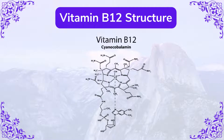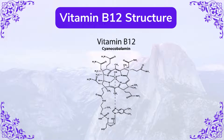This is the vitamin B12 structure — it is a very complex structure. You can see there is a ketone group, an amino group, an alcohol group, and you can also see that there is a cobalamin in the center of the structure. It is a very complex structure, but it is a very useful vitamin because it helps in various functions of the body like amino acid metabolism, fatty acid metabolism, and DNA synthesis.